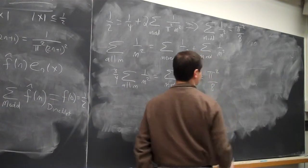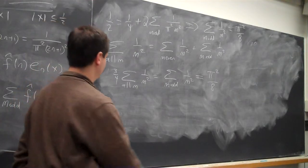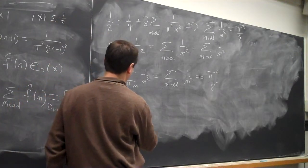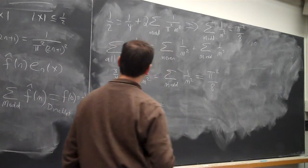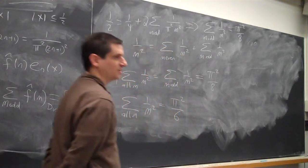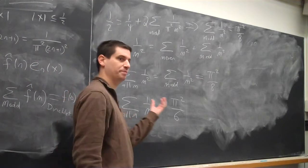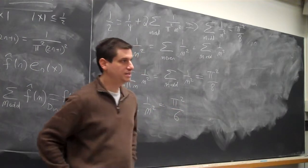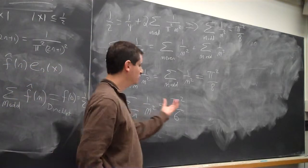So we get the sum over all m of three fourths, one over m squared, is the sum m odd, one over m squared. All right, so all we have to do is multiply pi squared over eight by four thirds. And we get the sum over all m of one over m squared, is pi squared over six. All right, we've now rigorously proved this modulo the fact that we didn't go through the details in class of Dirichlet's theorem. This is a great application of Fourier series. It allows us to rigorously prove statements like this.